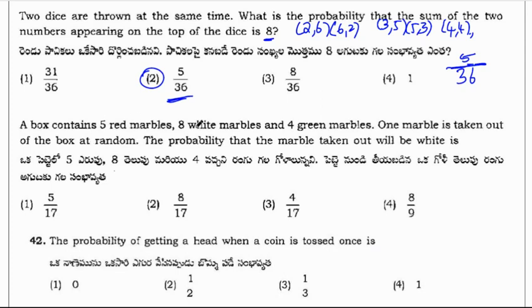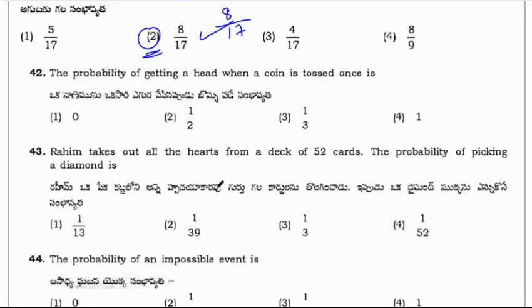A box containing 5 red marbles, 8 white marbles and 4 green marbles. One ball is taken from the box at random. The probability that the marble taken out will be white. So white color marbles are 8. Total balls, 5 plus 8 is 13, 13 plus 4 is 17. Out of 17, white color balls are 8. So 8 by 17 will be the probability that the marble taken out is white. So option 2. Probability of getting a head when a coin is tossed is 1 by 2 and also tail is also 1 by 2.